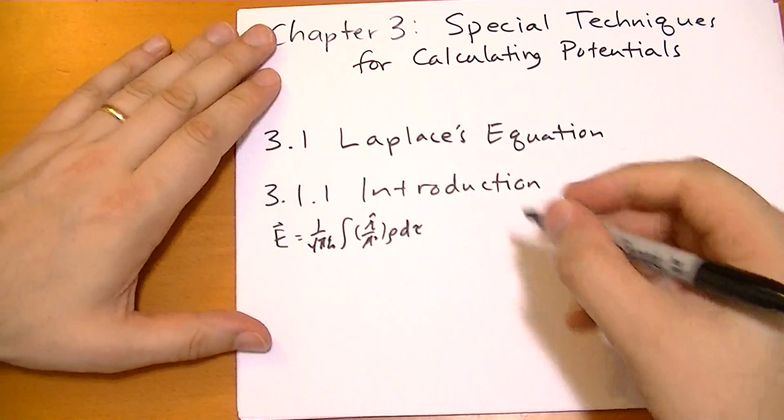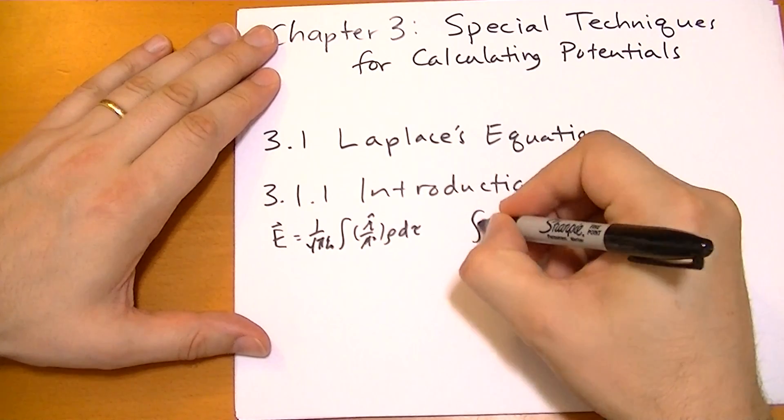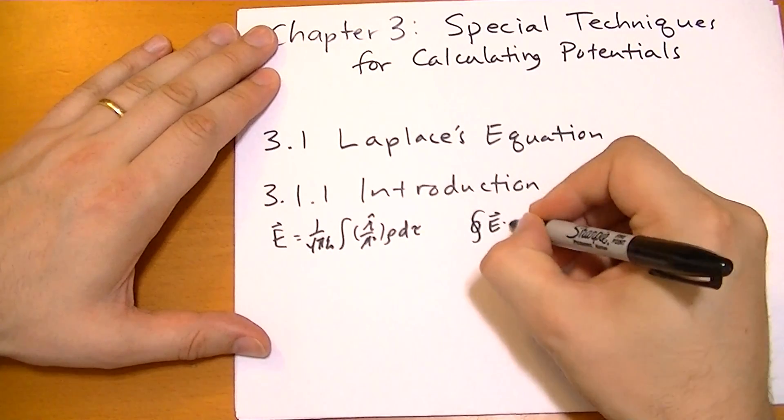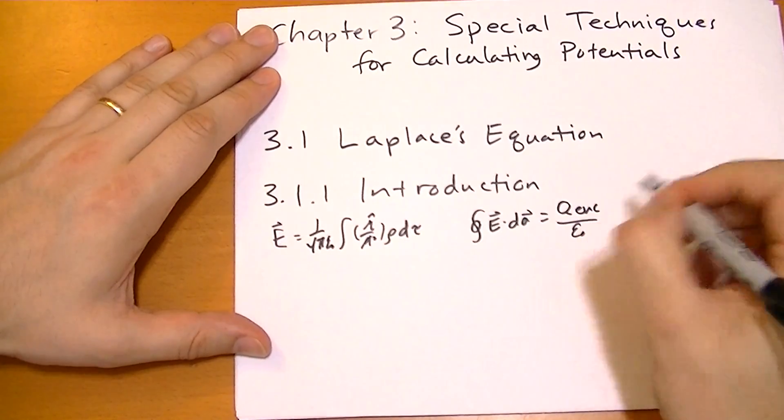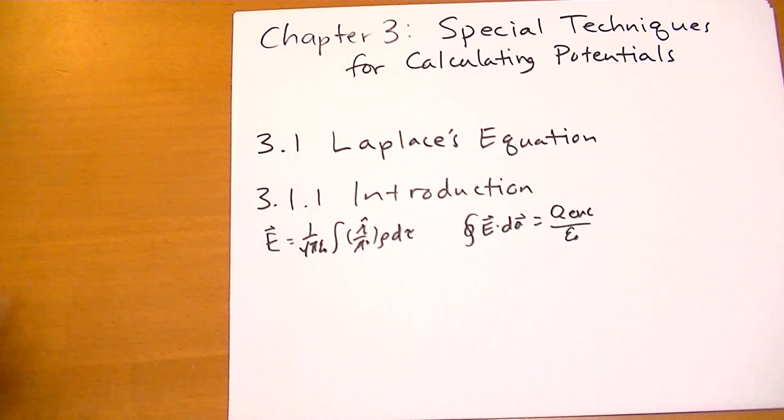So we discovered Gauss's Law, which basically says the flux of the electric field through a surface is equal to the total charge enclosed over epsilon naught. And that works for the most trivial cases, as long as there's some kind of symmetry.